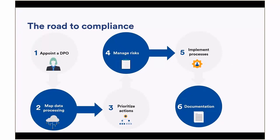Becoming GDPR compliant is a way of doing business that will be embedded in multiple areas of an organization, and it does take multiple steps to accomplish. There are six steps that have been identified: appointing a data protection officer, mapping your data processing, managing risks, implementation, and documentation.